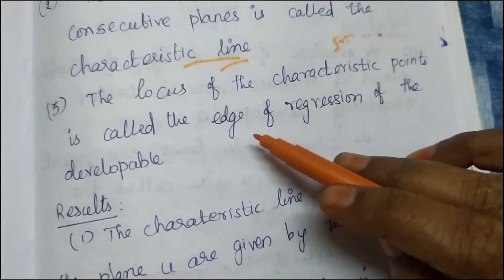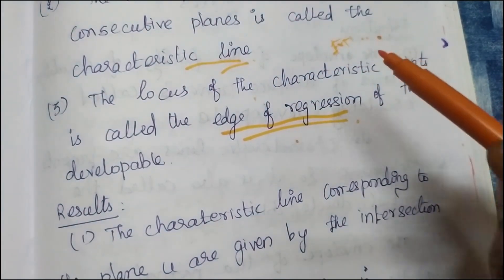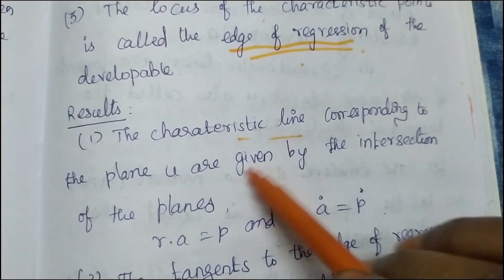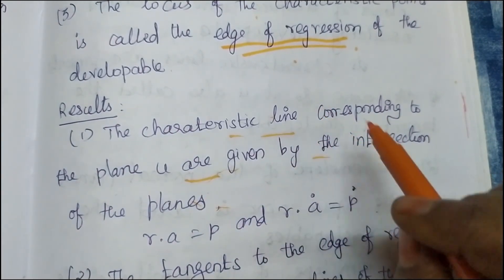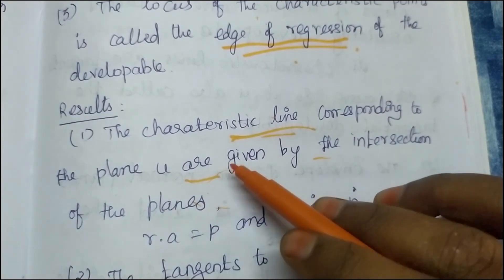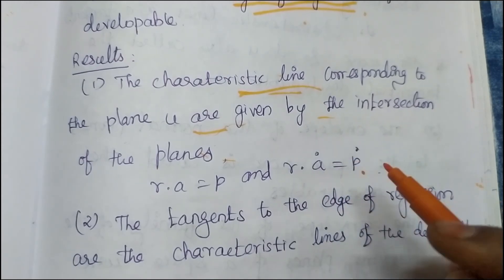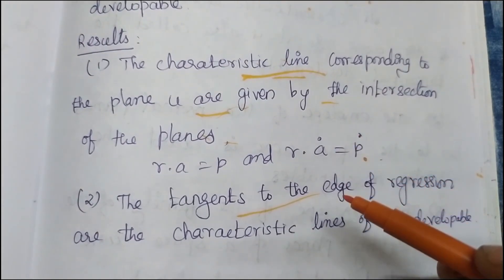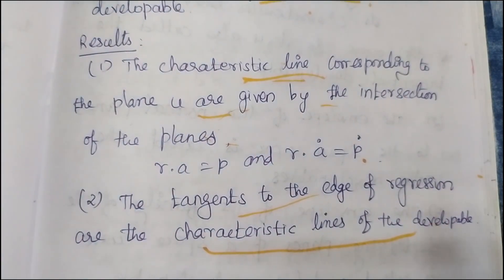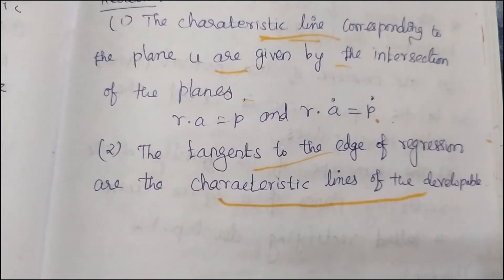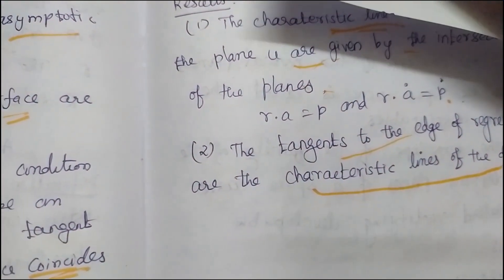Locus of characteristic points is the edge of regression. The locus of characteristic points is called the edge of regression. The characteristic line corresponding to the plane in u are given by the intersection of the planes. The intersection of consecutive planes is the characteristic lines. The equation of the plane is r dot a equal to p and r dot a dot equal to p dot. The tangent to the edge of regression — locus of characteristic points is the edge of regression. Other tangents are the characteristic lines of the developable. The locus of characteristic points are the tangent lines to the edge of regression. Tangents are the characteristic lines of the developable.